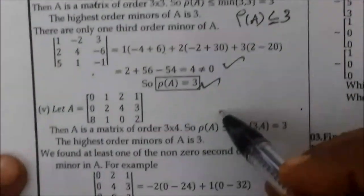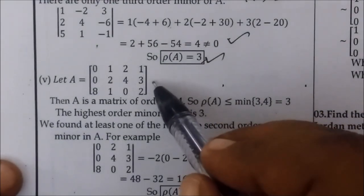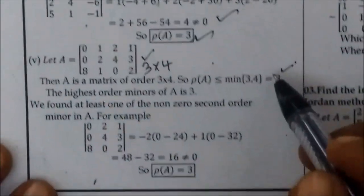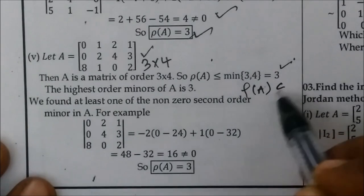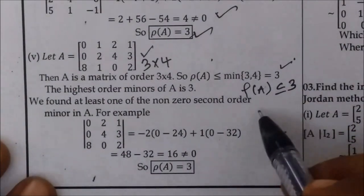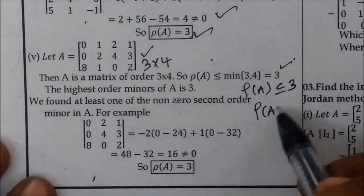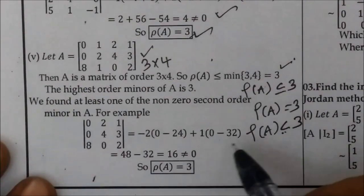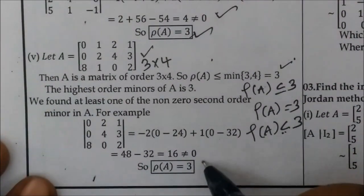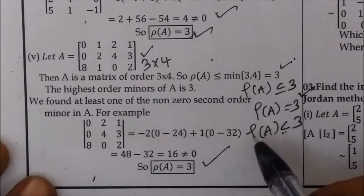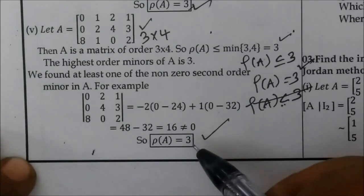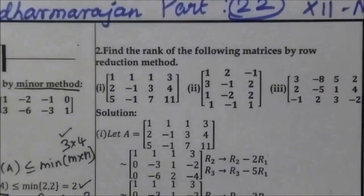Coming to the 5th question: 3 rows, 4 columns — minimum is 3. So we take the minimum 3 and write rho of A less than or equal to 3. Rho of A is equal to 3. This is question number 1, subdivision 5. We will see the next question in the next video. Thank you.